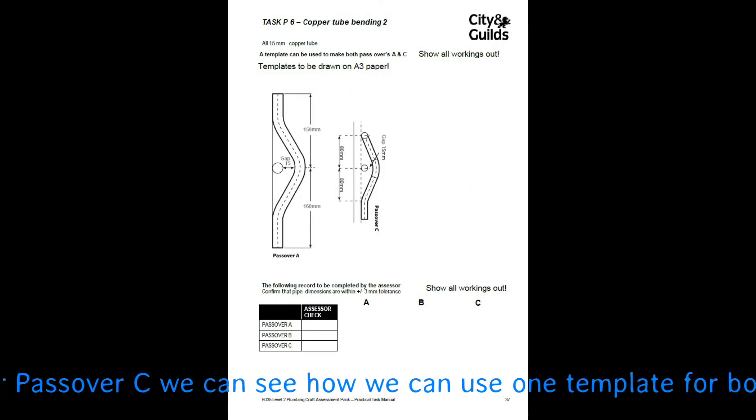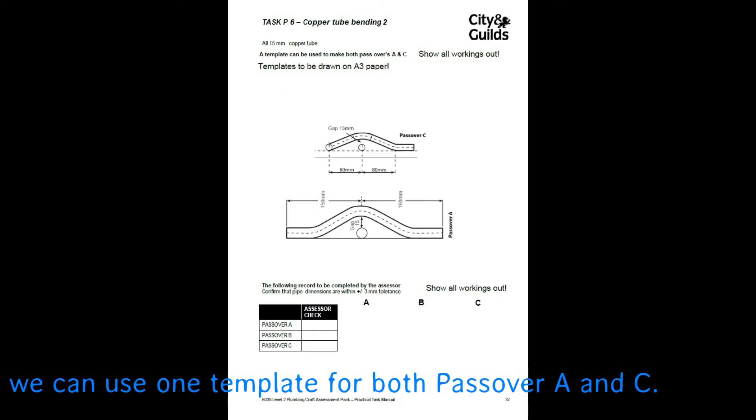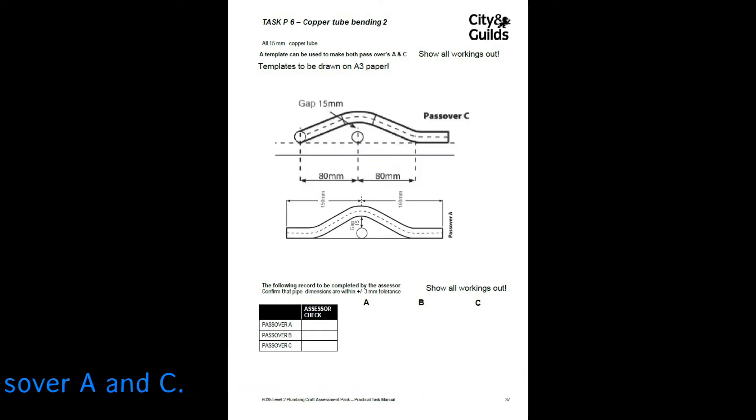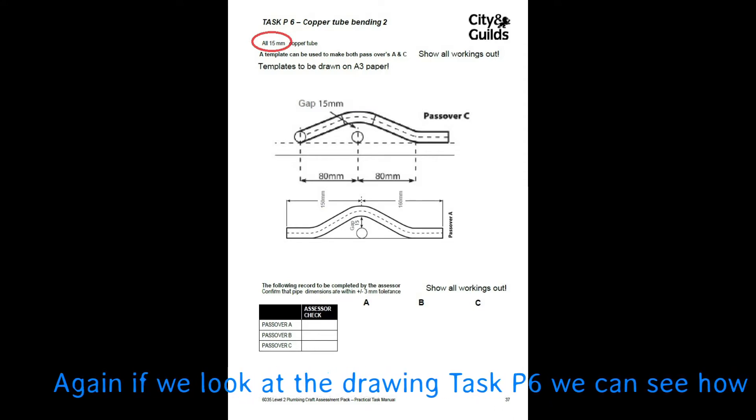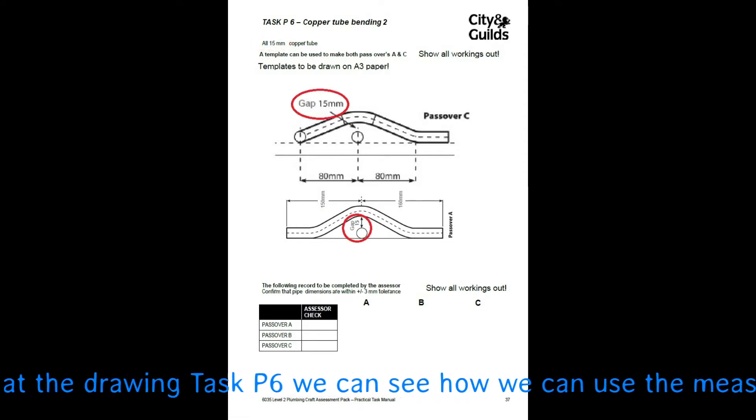Do a little bit of magic here just to show you how it works. So we mirror image it over, flip it around, expand it up, and as we can see we can now use this drawing to do our template. So we're using a 15mm copper pipe in this case, the gap is 15mm.